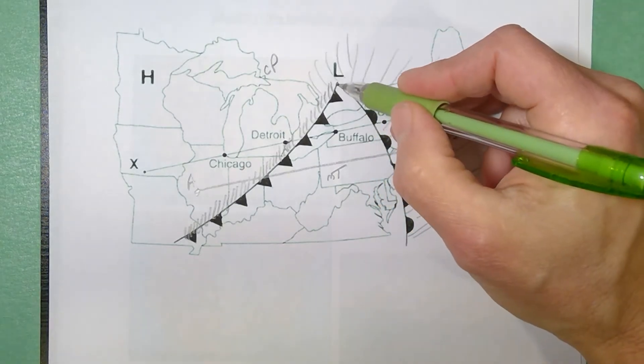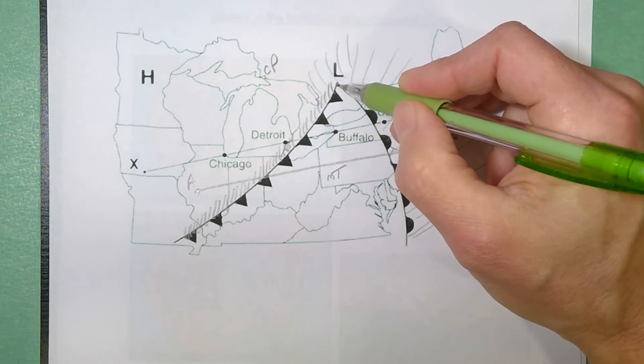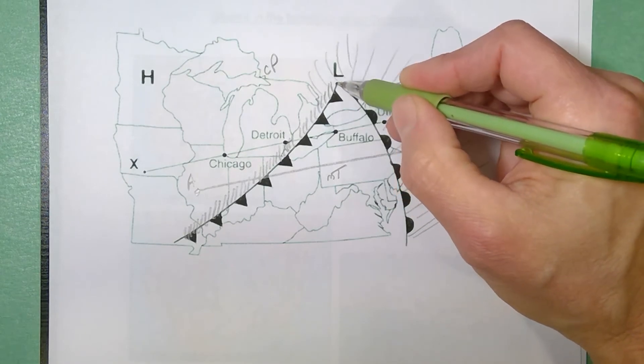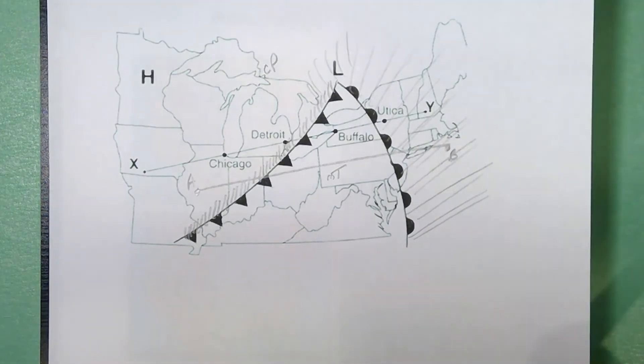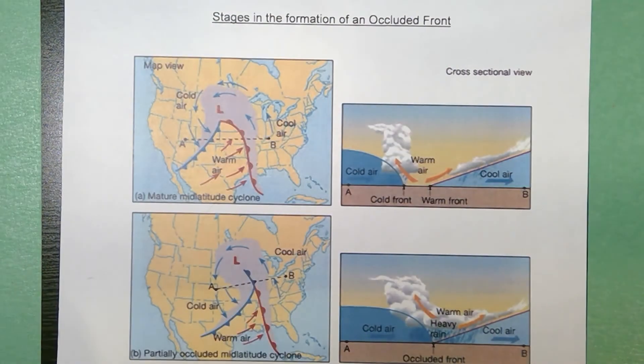So at an occlusion it's almost like this system, this open system is going to zip down creating an occluded front in the center. So here's some more diagrams showing you that.